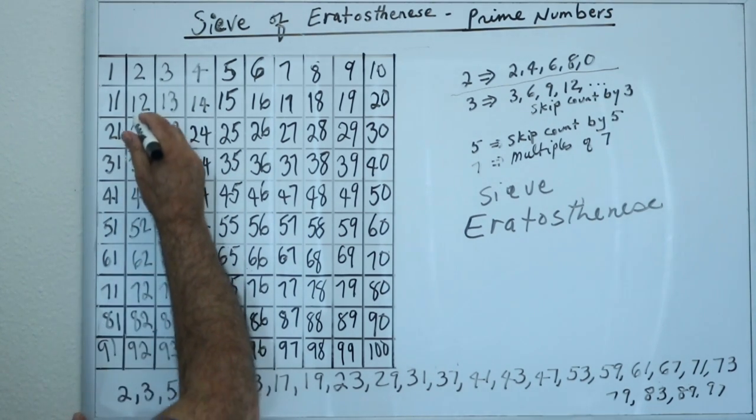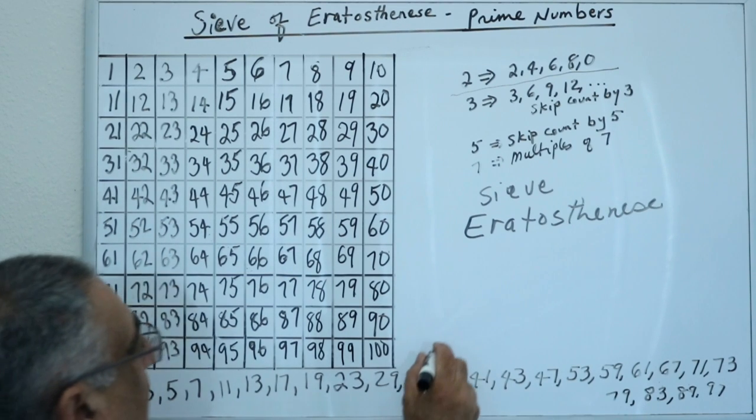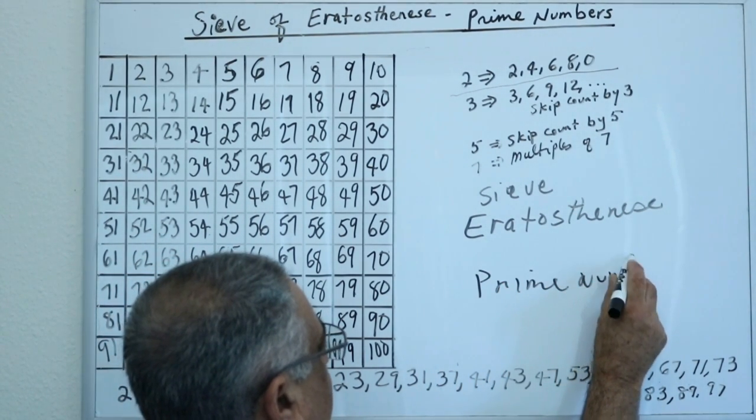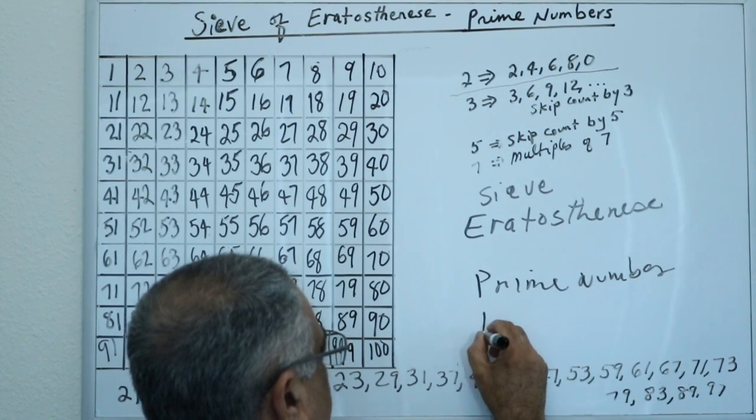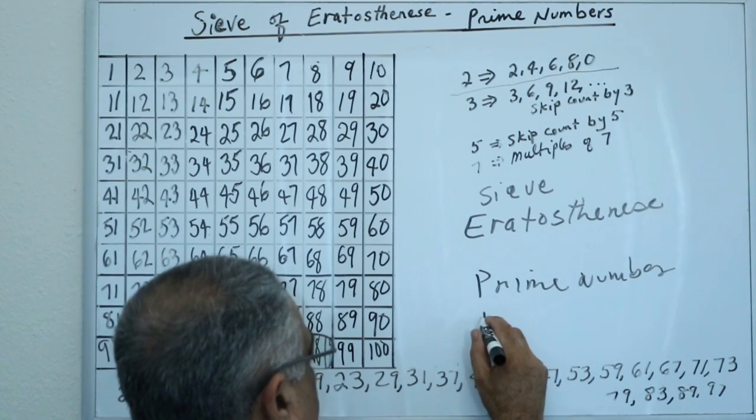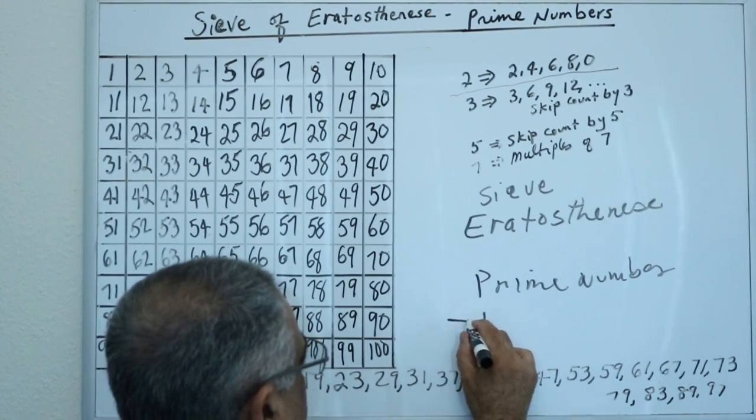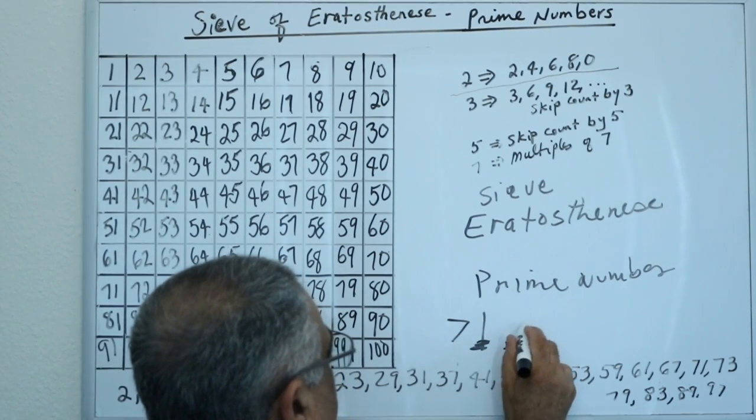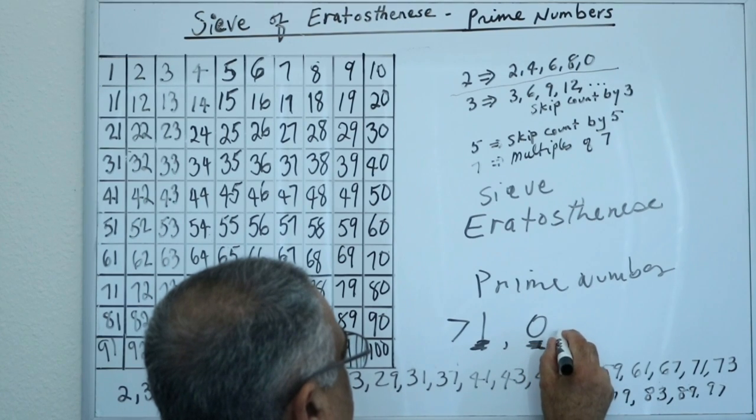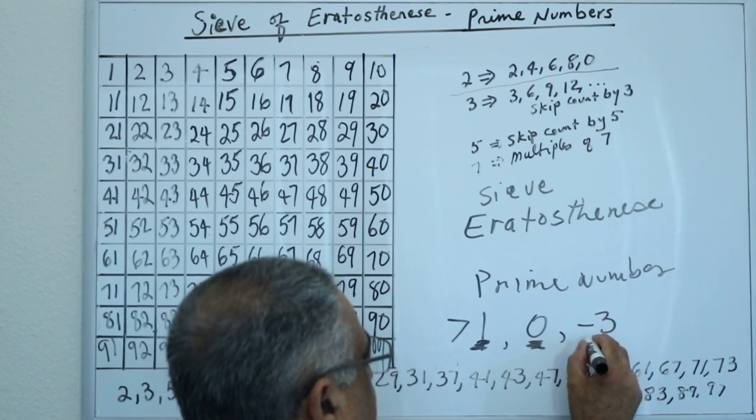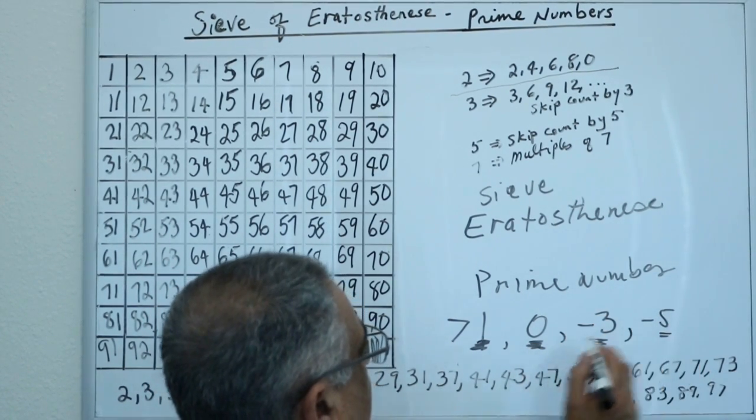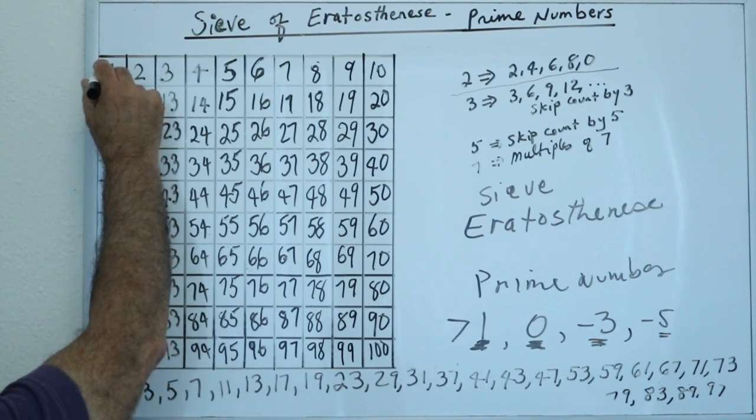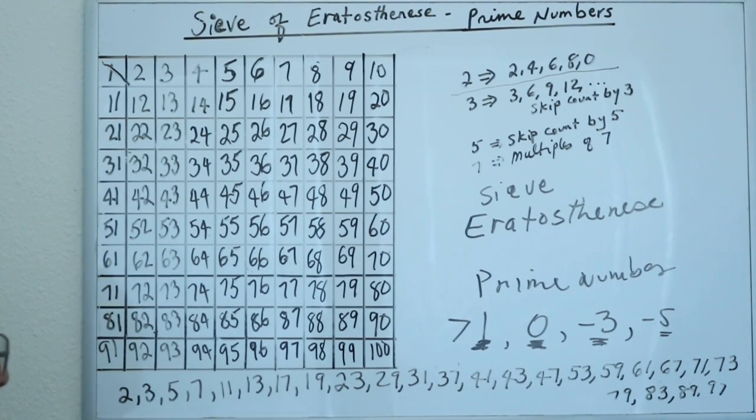So the first thing we do, we start with 1. Is 1 a prime number? Prime numbers are numbers that are divisible by 1 and also itself. Well, the definition of prime number is that it has to be greater than 1. So therefore 1 is not a prime number, 0 is not a prime number, negative numbers are not prime. So I'm going to eliminate 1. 1 is not in the list.